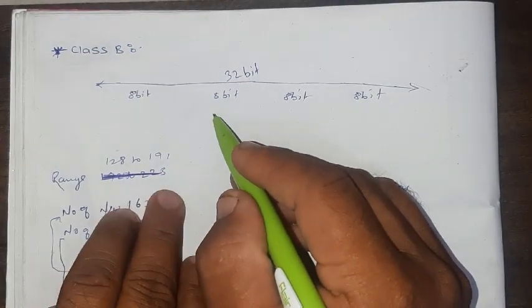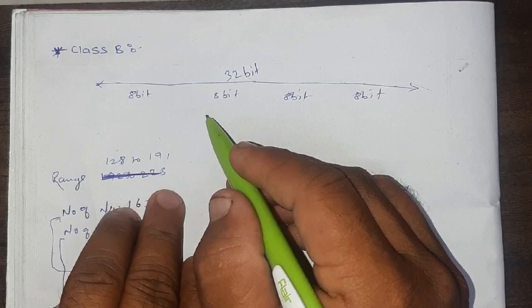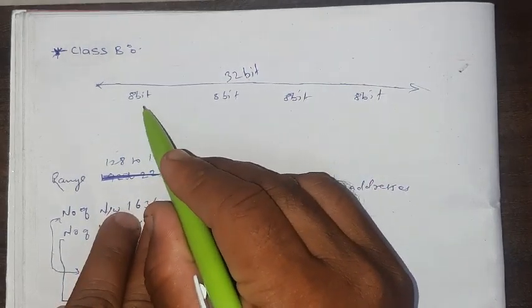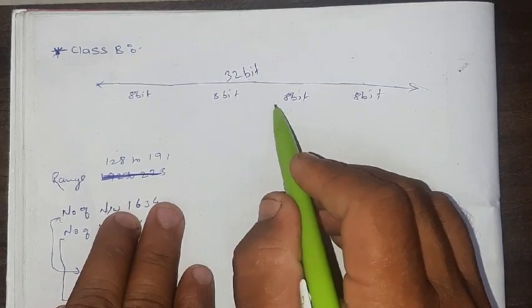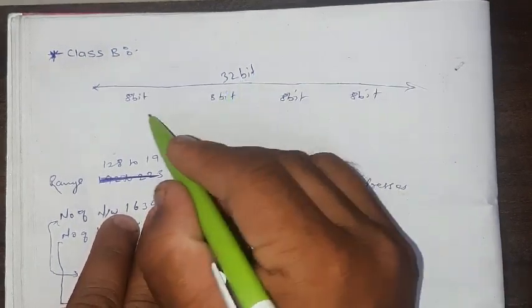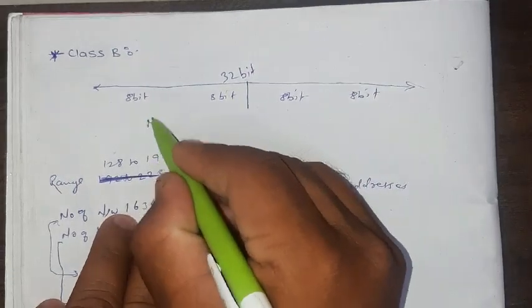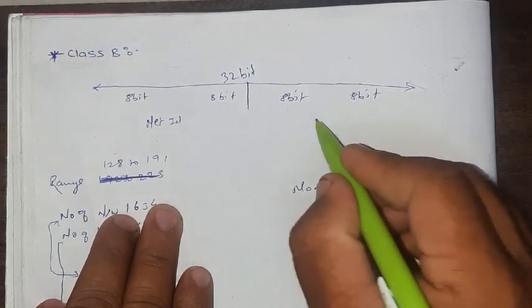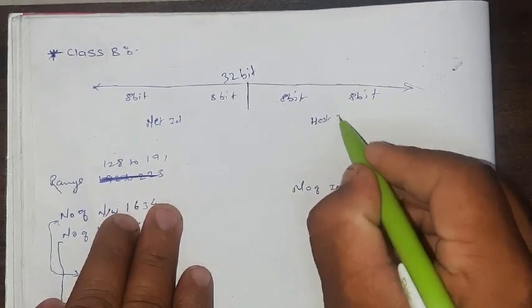We know already about Class A. In Class A, the network ID has 8 bits for network ID and the rest of the 24 bits for the host ID. But here the first 2 bytes for the net ID and the rest of the 2 bytes for host ID.